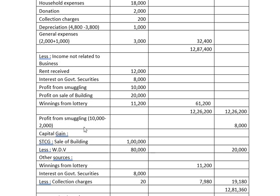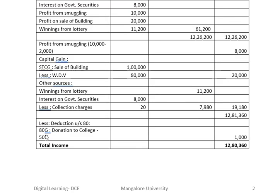Profit from smuggling business is Rs. 8,000. This is under the business head but it is speculation business. Next is capital gain — short-term capital gain on sale of building: sale price Rs. 1,00,000 less written down value Rs. 80,000. So short-term capital gain is Rs. 20,000.